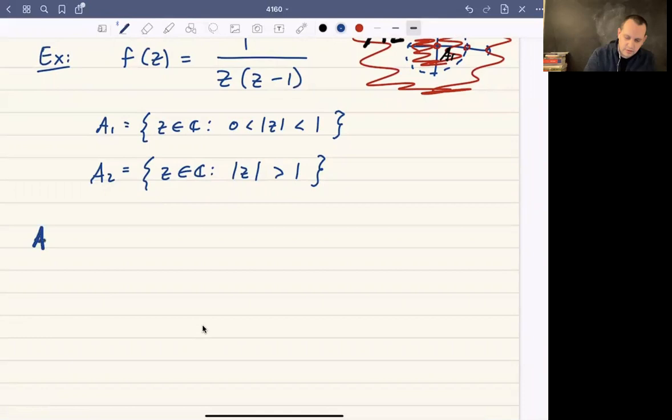So let's first work over A1. What we're going to do over A1 is look at when the modulus of z is less than one but greater than zero, and what we can do is take our function and now we're just going to do all the usual stuff.